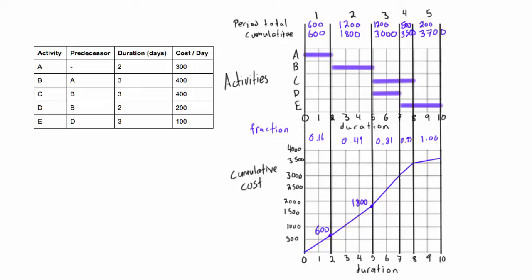Then remember, this was for cumulative costs. This point here, we had 3000. This point here, we had 3500. And this final point, the end of the project, the total project cost was 3700.